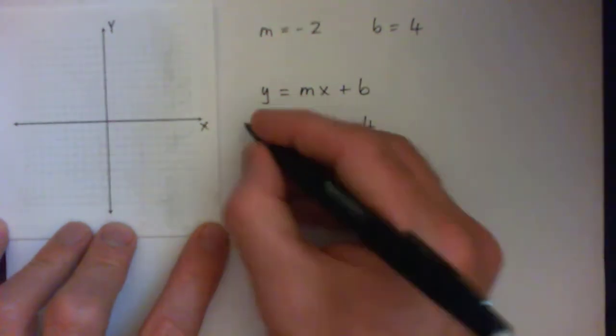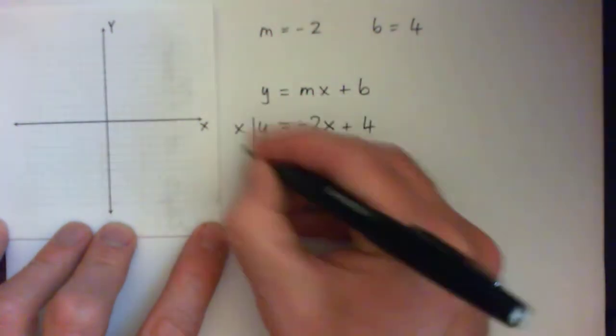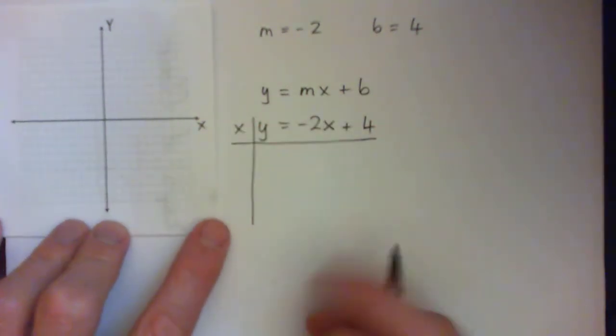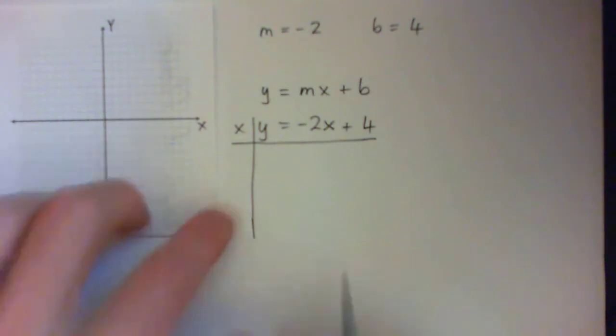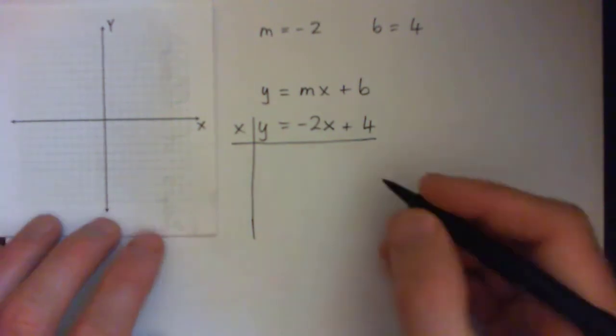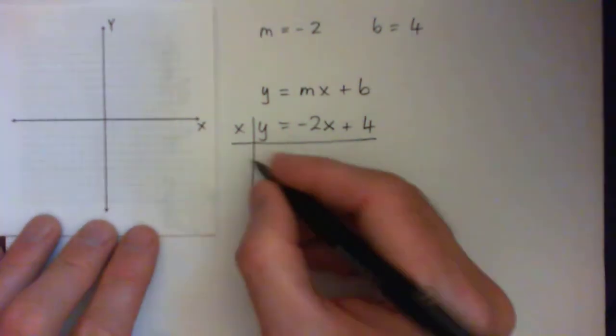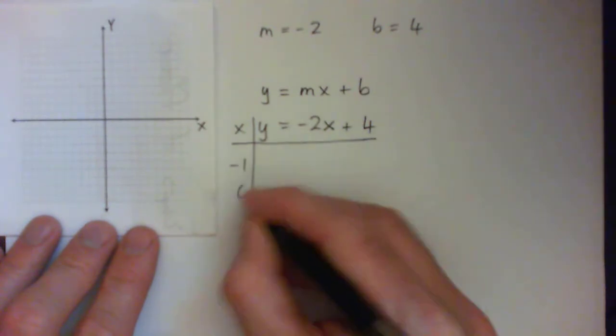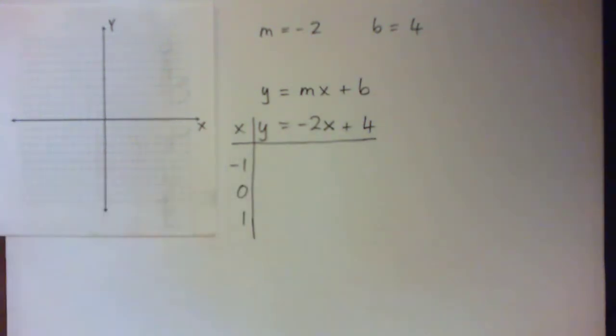And we're going to make a little table and plug some numbers in. And you can plug in any numbers you like. So, just for fun I'll suggest plug in like a negative 1, 0 and 1 or something like that. But it doesn't matter. You guys could do 1, 2, 3 or 0, 1, 2 or 0, 5, 10 or whatever you want.